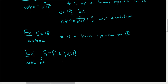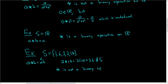For example, you can take 2 and star it with 18. According to our definition, that's 2 times 18, which is 36. And 36 is not an element of S, so star is not a binary operation on S.